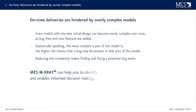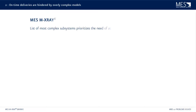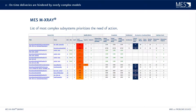We already had a look at MX-Ray, one of our tools that can also help with this problem. In particular, it can help you identify the most complex part of the model and enable you to make informed decisions. MES MX-Ray can provide a list of the most complex subsystems. You can then use this list to prioritize the next steps or actions you want to take. You can see the local complexity — most complex first — and also additional model metrics and properties.